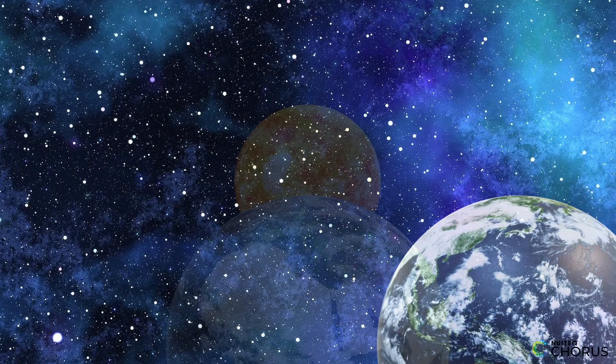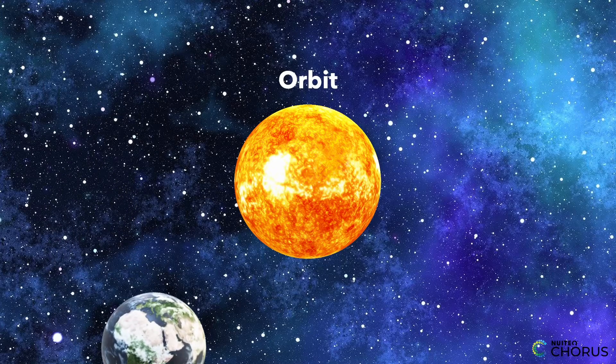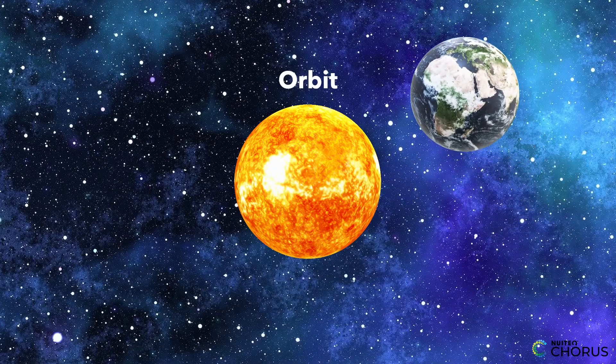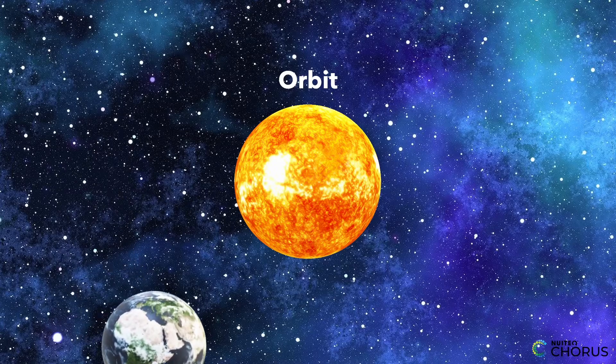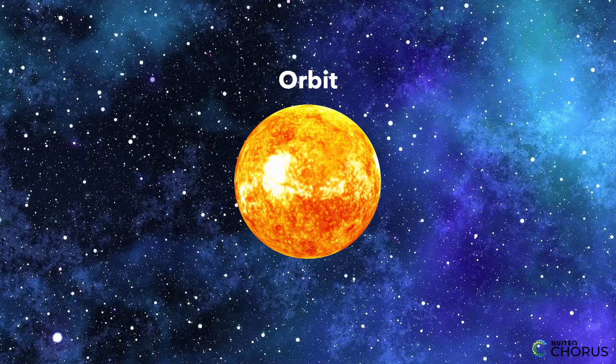As you're flying around, you see the Earth is also going around the Sun in a big loop called an orbit. Because of the tilt on the Earth's axis, different parts of the Earth are getting more or less sunlight, depending on where the Earth is in its orbit.